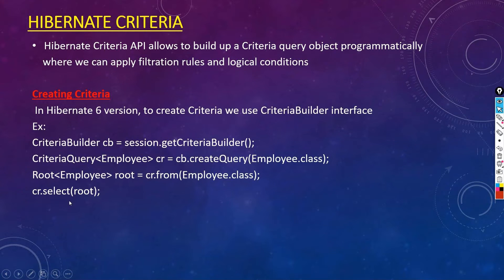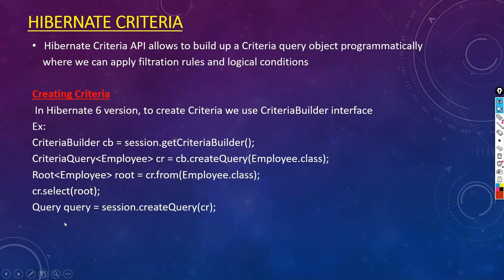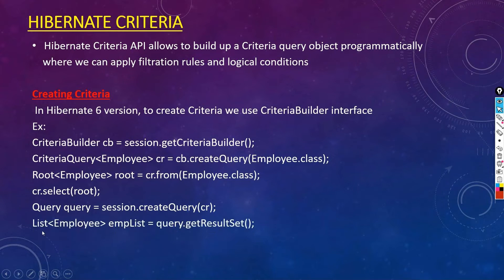To get the records, we use the Query interface: Query query = session.createQuery(cr). Then to get the list: List<Employee> employeeList = query.getResultList(). When you call this method, since we applied cr.select(root) without any restrictions or filtration rules, it is going to pull out all the records from your table.